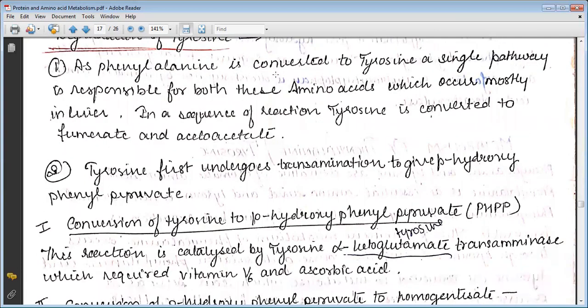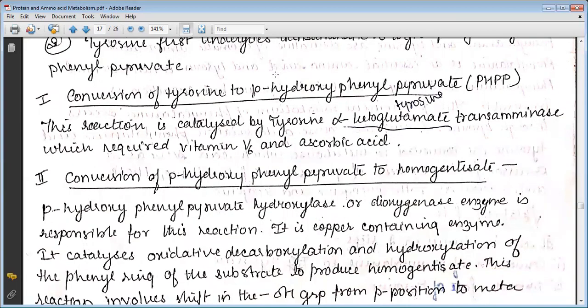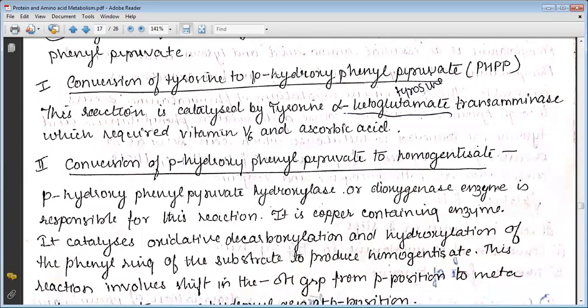Conversion of tyrosine to para-hydroxyphenylpyruvate, also known as PHPP. This reaction is catalyzed by tyrosine alpha-ketoglutarate transaminase, which requires vitamin B6 and ascorbic acid. The second step is conversion of para-hydroxyphenylpyruvate to homogentisate.